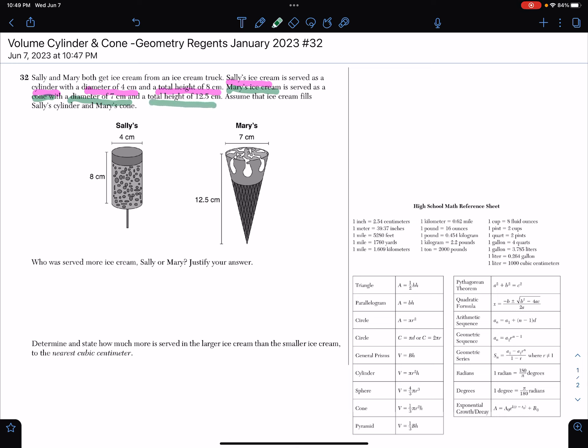Assume that the ice cream fills Sally's cylinder and Mary's cone. Who was served more ice cream, Sally or Mary? Justify your answer. Determine and state how much more is served in the larger ice cream than the smaller ice cream to the nearest cubic centimeter.